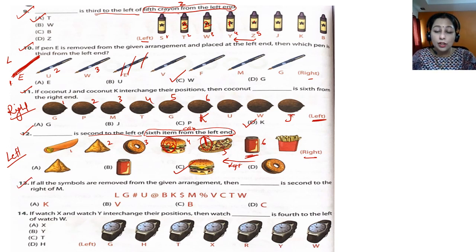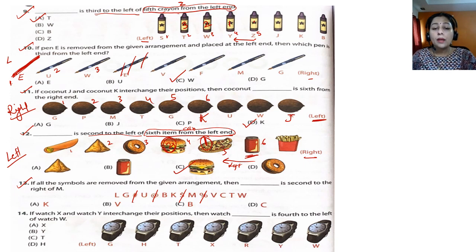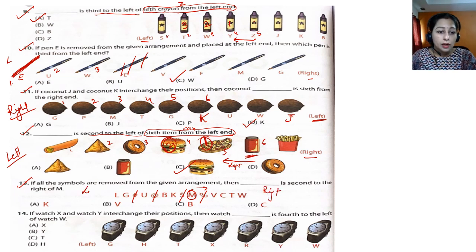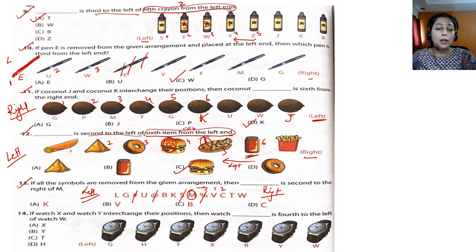Question 13: if all the symbols are removed from the given arrangement, remove all symbols — all others are letters so keep those. Then dash is second to the right of M. Where is M? Right of M is this side. Second to the right of M: one, two. The answer is C, which is option D.